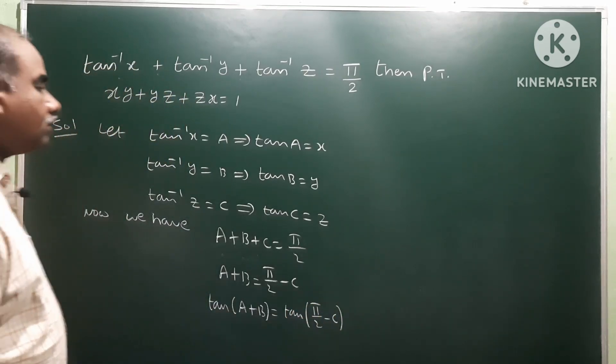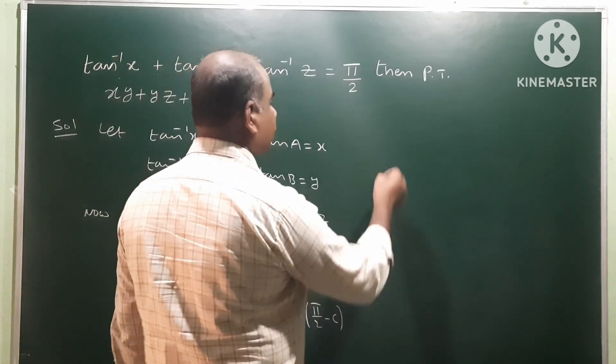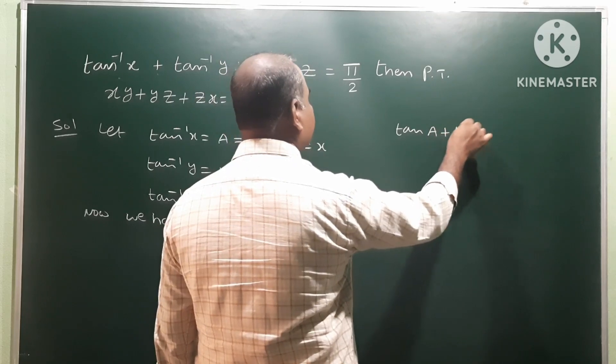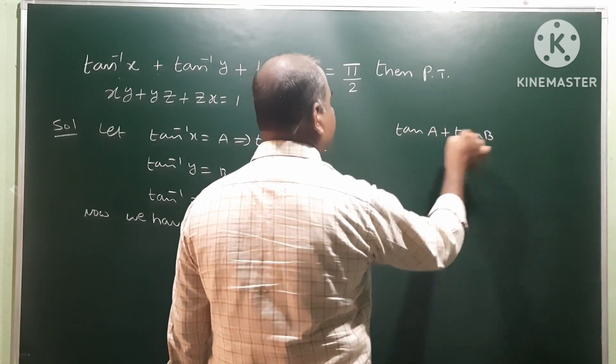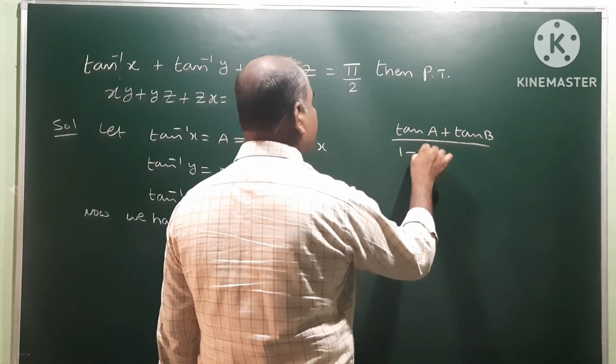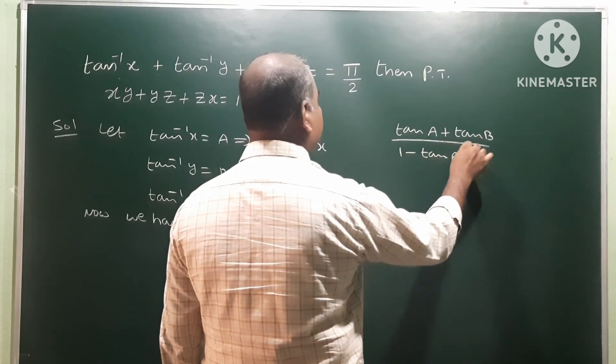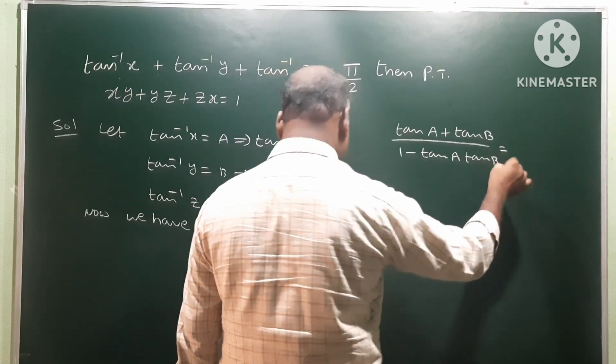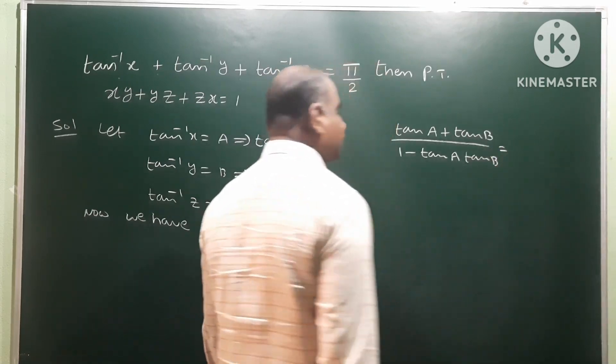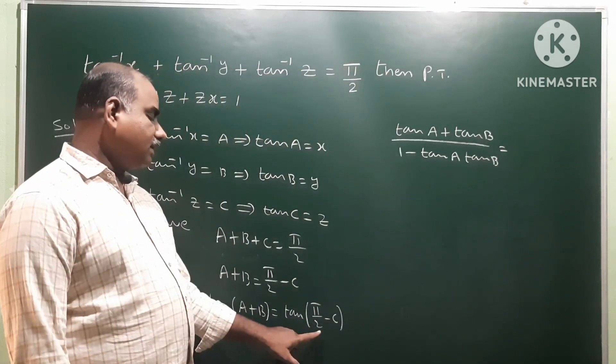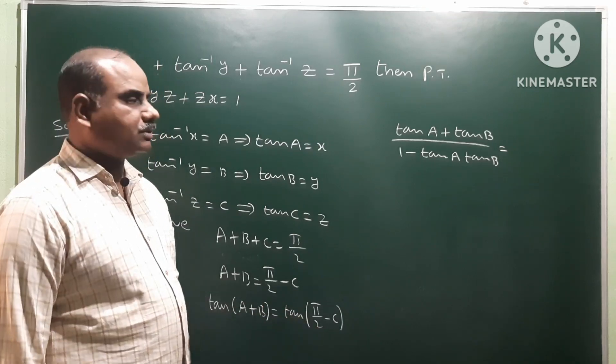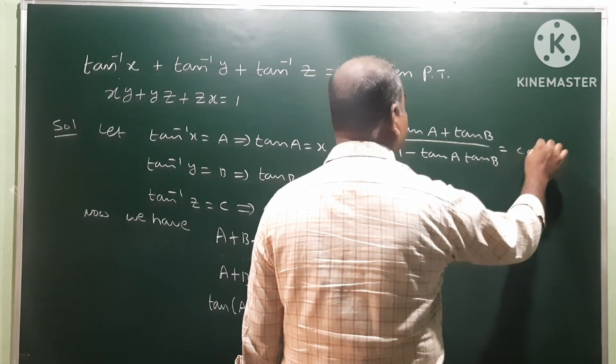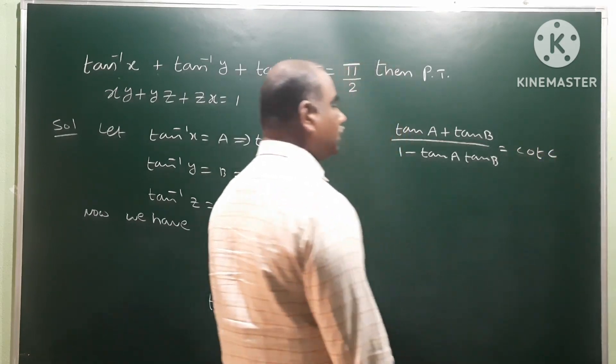Now, write the formula tan a plus b. Tan a plus b means tan a plus tan b by 1 minus tan a tan b is equal to tan 90 minus c. So, for 90 degrees tan becomes cot, 90 minus c means first quadrant, so it is positive, therefore it becomes cot c.